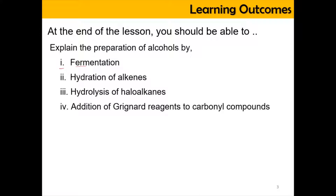First we have fermentation, second we have hydration of alkene, third we have hydrolysis of haloalkane, and number four we have the addition of Grignard reagent to a carbonyl compound. Some of these are not new to you because you have encountered them in the chapter of alkene, chapter 7. The addition of Grignard reagent with a carbonyl compound is going to add the carbon chain to the product.